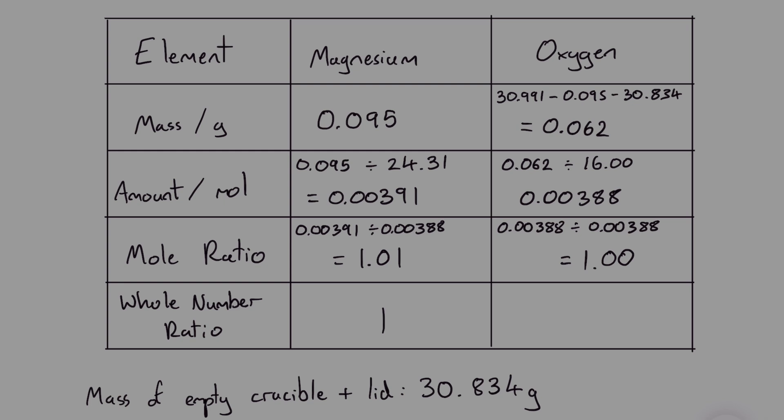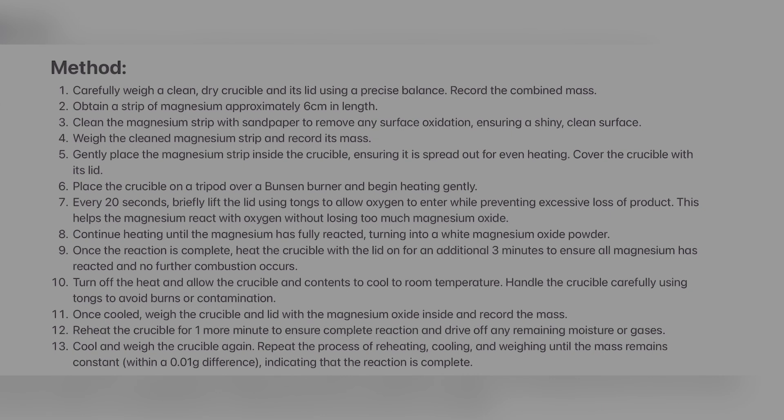So the simplest ratio of magnesium to oxygen is 1 to 1 which means the empirical formula of magnesium oxide is MgO. This tells us that in magnesium oxide magnesium and oxygen atoms combine in a one to one ratio.